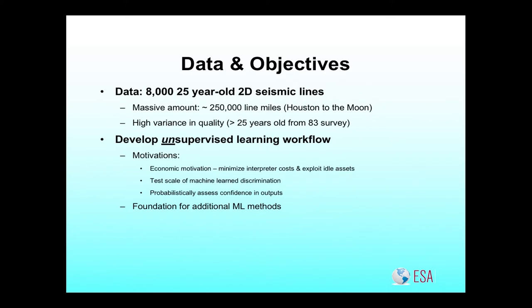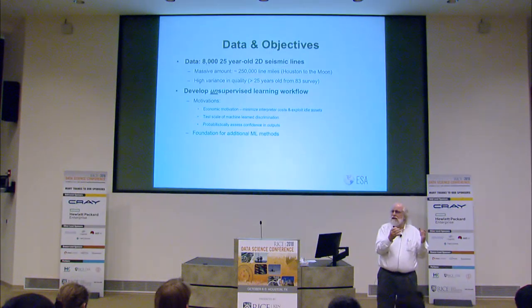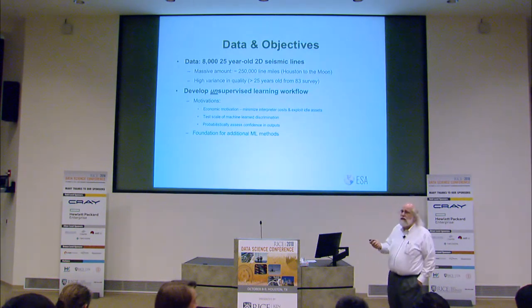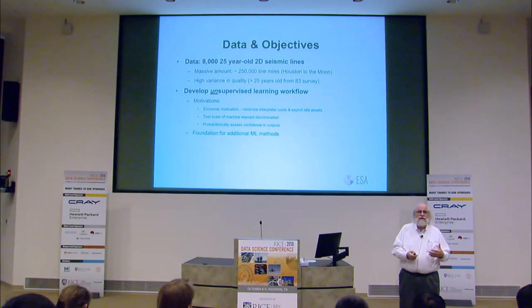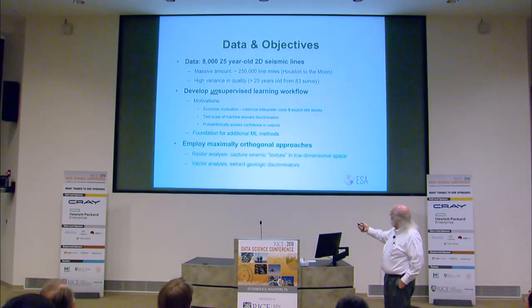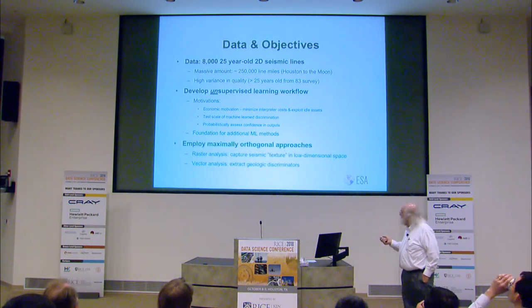We wanted to develop an unsupervised approach because there's an extreme premium on the time of the geophysicists who interpret and process this data. If we can restrict their attention to more high-level functions, we maximize the return on their time. We also wanted to take proof-of-concept experiments done on a few lines and scale them up to thousands. Because we're doing this without direct human intervention, we need a way to probabilistically assess it, and we want to use it as a foundation for further methodological research.